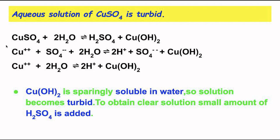In the hydrolysis of CuSO₄: Cu²⁺ and SO₄²⁻ ions are produced. Cu²⁺ reacts with water to give H⁺ ions and Cu(OH)₂. The SO₄²⁻ ions cancel out. The solution is acidic, but the key reason for turbidity is that Cu(OH)₂ is sparingly soluble in water, making the solution turbid rather than clear.